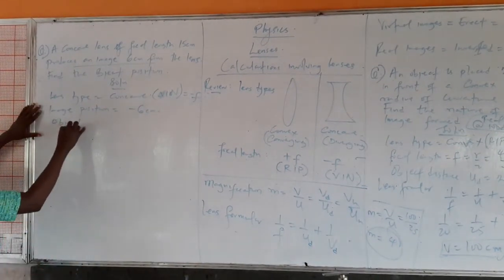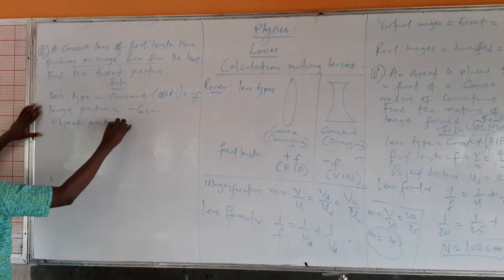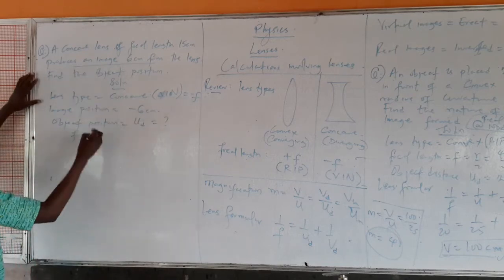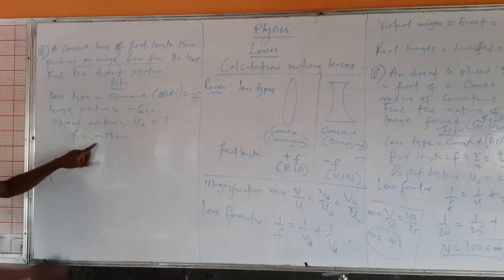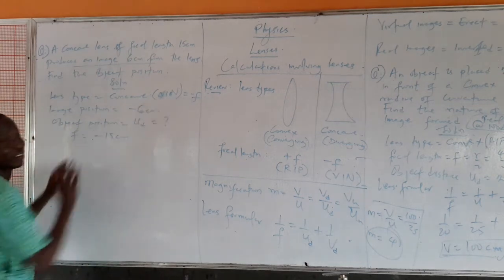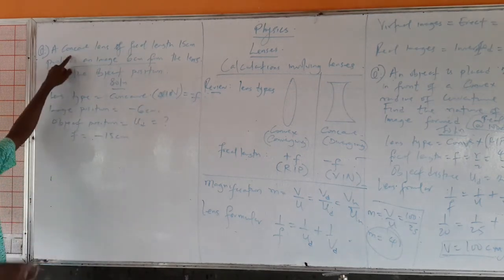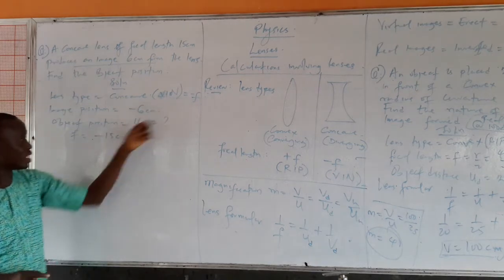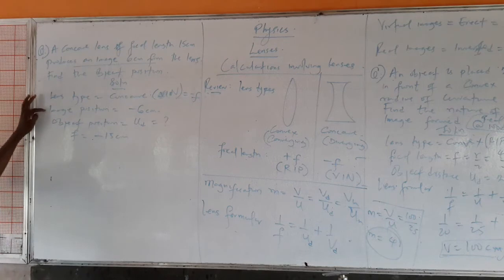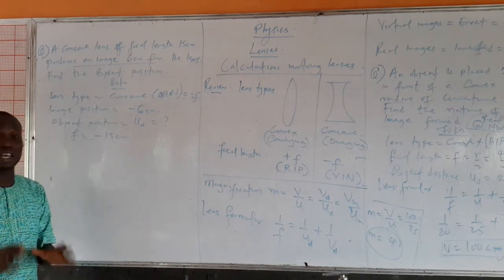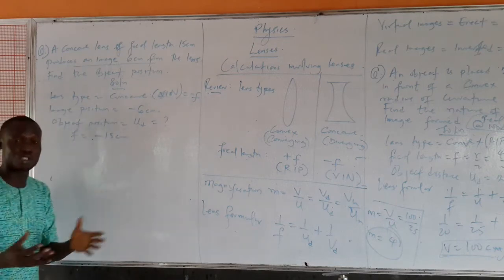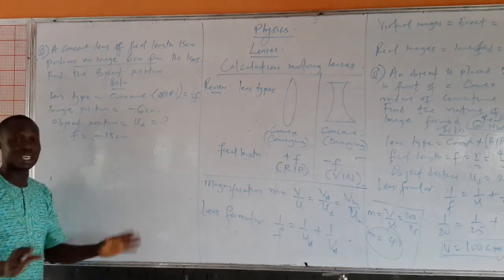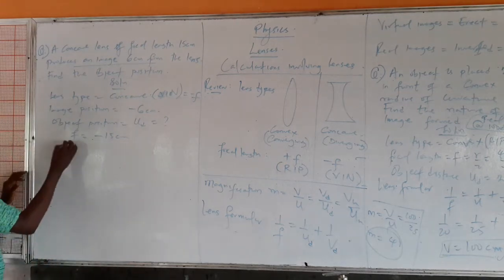We are looking for the object position U, and we are given the focal length as minus 15 cm. Why negative? Because we are dealing with a concave lens — VIN. Any time we are dealing with a concave lens, the focal length is taken as negative, and if the image position is given it is also taken as negative. But if the image position is not given, you don't need to pre-assign it negative because by the time you calculate your answer, you will get it as negative.